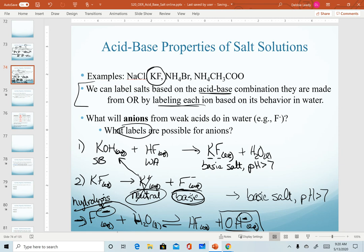The labels that are possible for anions, of course, they can be neutral. There's seven of those that come from our strong acids. Or as we saw with fluoride, they can be basic, and there are a lot of those. Realize that anions can never be acidic. They will never react in order to produce hydronium. So the only two labels for anions are neutral and basic.